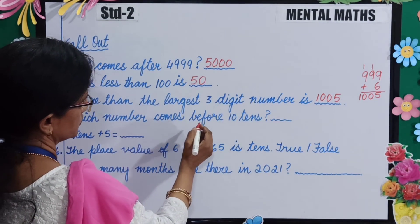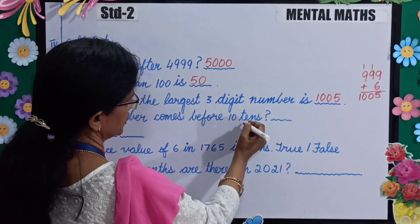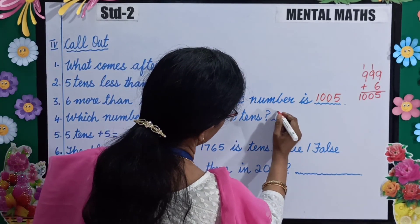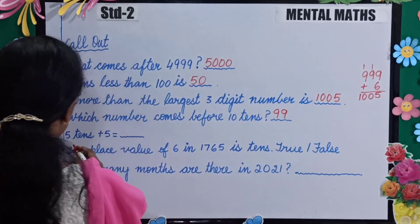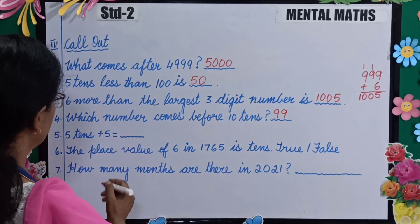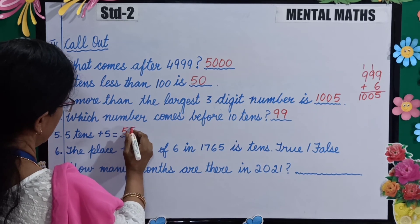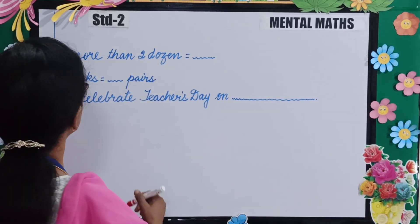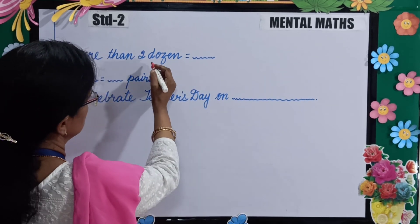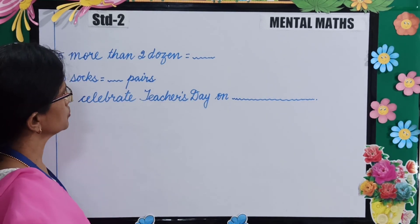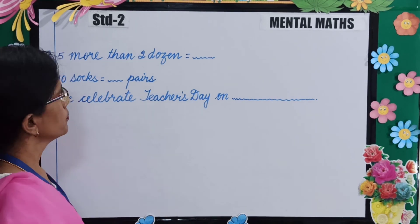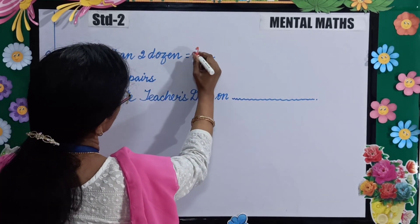Which number comes before 10 tenths? 10 tenths means 100, so before 100, which number comes? Yes — 99. 5 tenths plus 5: 5 tenths means 50, plus 5 is 55. Next, 5 more than 2 dozen: 1 dozen is equal to 12, so 2 dozen is 24, and 5 more is 29.